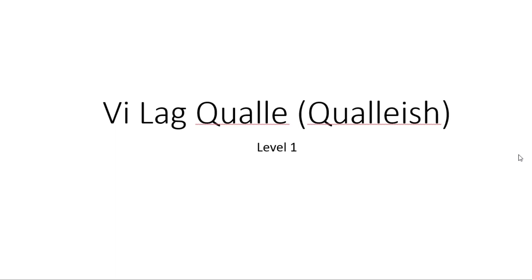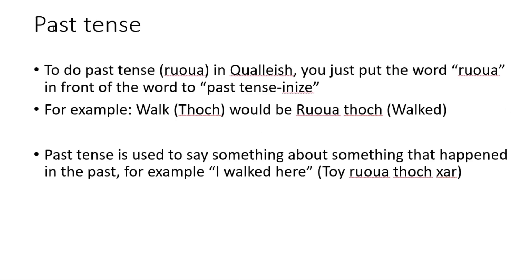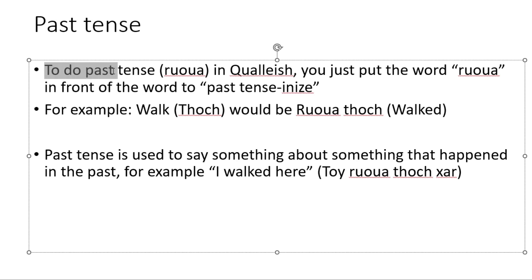Hello and welcome back to Learn Kwalish. Today we're going to talk about the past tense. To do past tense in Kwalish, you just put the word RUOA in front of the word to past tense it. For example, WALK — TOG — would be RUOA TOG, meaning WALKED.